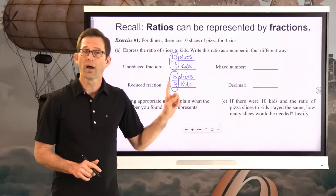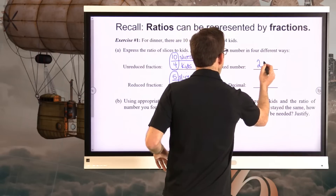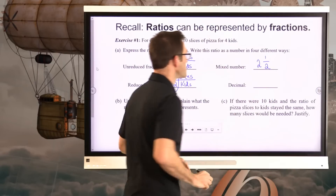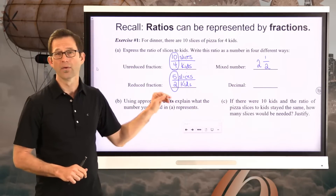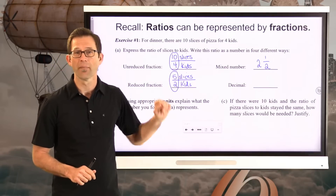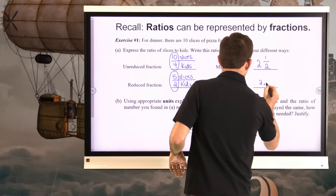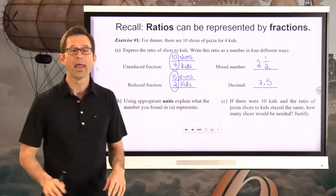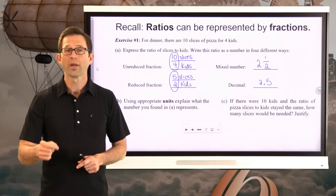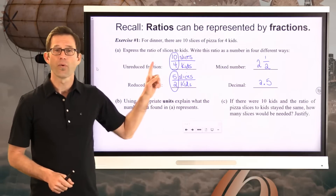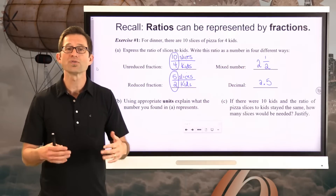As a mixed number, if I change five-halves I think: five divided by two is two with a remainder of one, so I get two and a half. And finally as a decimal I could do ten divided by four or five divided by two, but I should just see that two and a half is the same as 2.5. Ten-fourths, five-halves, two and a half, and 2.5 are all the same number — they're just represented in different forms.